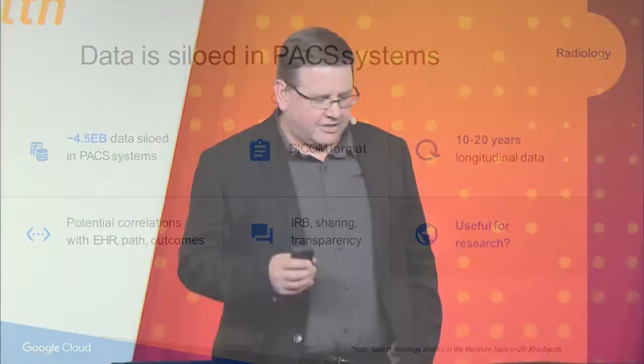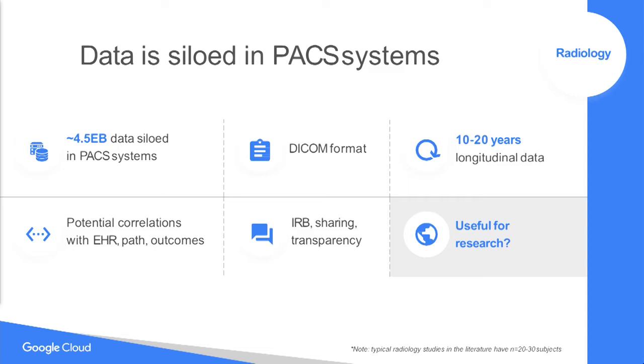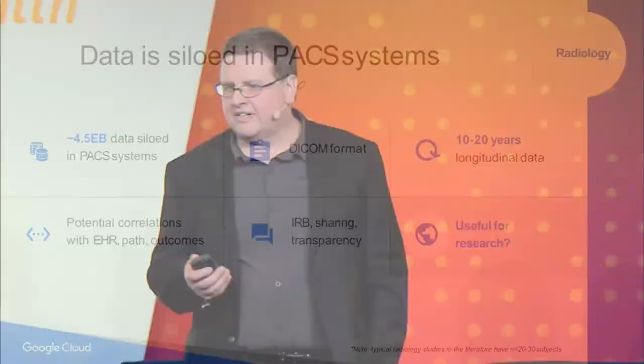This data is typically stored or siloed in radiology in what we call PACS — Picture Archiving and Communication Systems. It's helpful that this is generally in a standardized format called DICOM, and in many systems we have access to longitudinal data with the ability to correlate with electronic health records and pathology. There are standardized mechanisms for researchers to access this data through IRBs. It's been questioned by the research community how useful these clinical imaging archives are for research — and my former team and I recently explored this question.